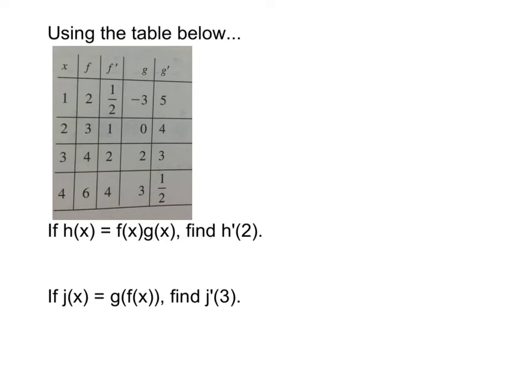It says if h of x equals f of x times g of x, find h prime of 2. Well, of course, it is a product. So the first thing we need to do is find h prime of x.